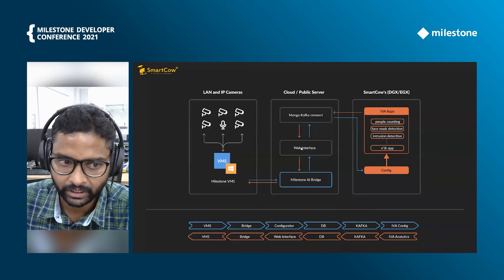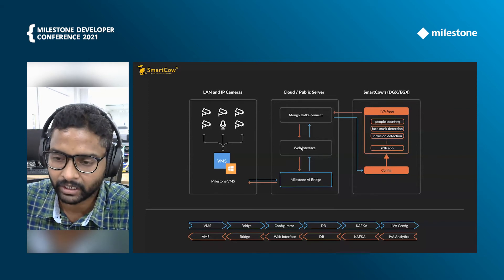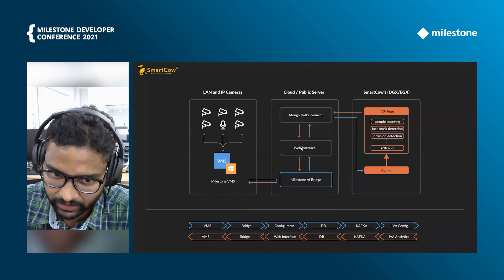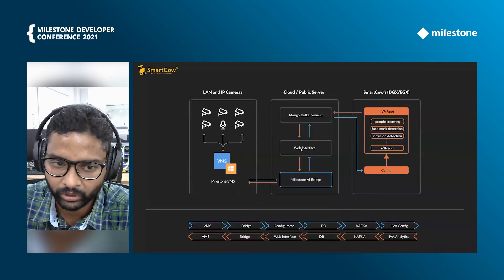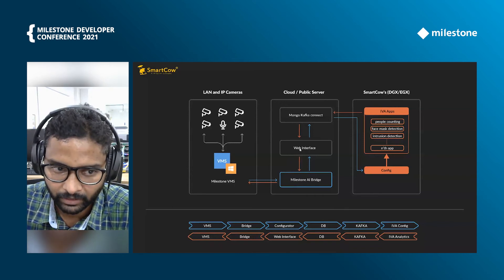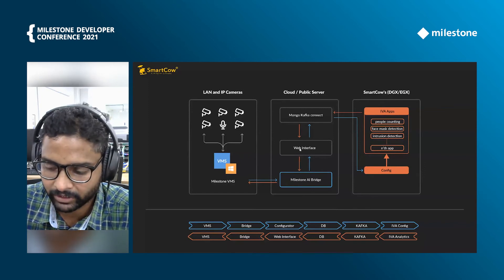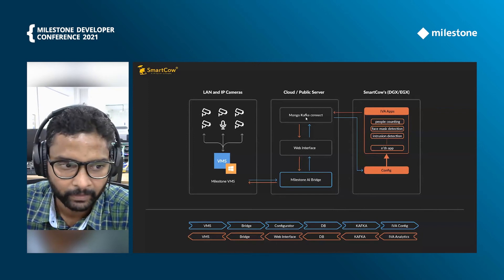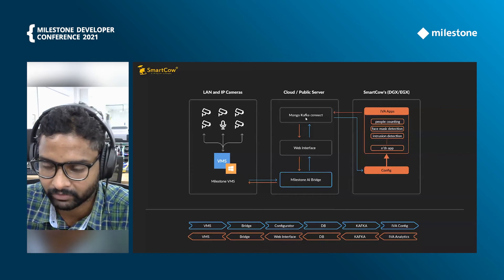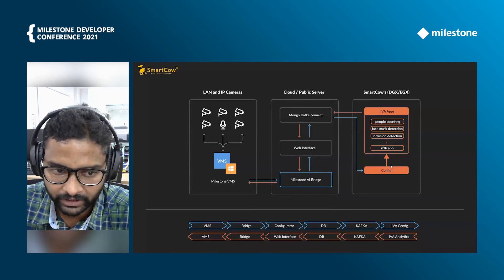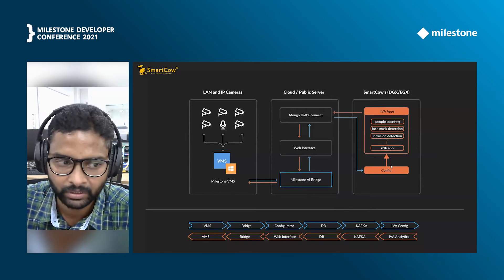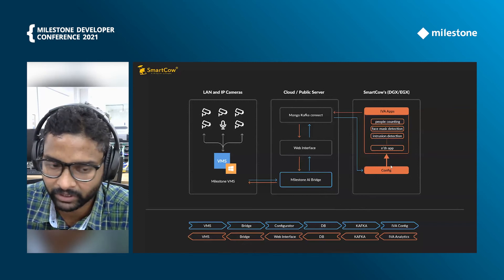Between the IVA applications and Milestone AI Bridge, we can add new VMS cameras and do necessary configurations for the region of interest lines and for the heat map grids. Here we can see in the graphs how many people are coming in and going out, and alerts for who is not wearing face masks or intrusion detections. The same alarms will be triggered to the VMS as well. We use Kafka Connect to stream analytics events from IVA apps and configurations from the web interface. Currently we have deployed our IVA apps on NVIDIA's Jetson AGX. This reads config like cameras, ROI lines, heat maps, etc. from the web interface and generates video analytics to Milestone VMS with the help of Milestone AI Bridge.